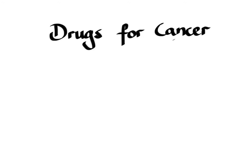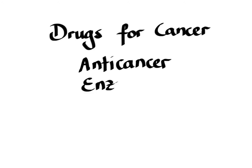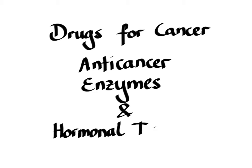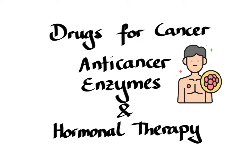In this first part of the lecture covering the pharmacology of drugs used for treatment of cancer, we are going to discuss anti-cancer enzymes and hormonal therapy. But first things first, let's briefly discuss what cancer is and how it develops. Cancer is generally defined as the uncontrolled growth of abnormal cells in the body. While normal cell growth is carefully regulated to meet the needs of the whole organism, cancer cells evade normal controls regulating cell proliferation and survival.